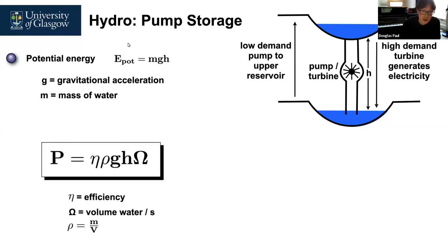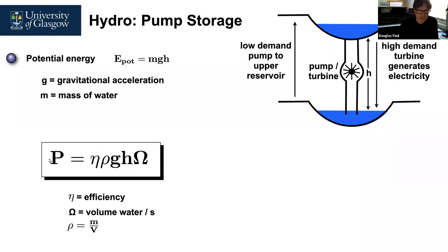The power from this comes from dividing energy by time. We convert mass to density — density being mass over volume — and omega is the volume of water per second, so these cancel out to give us back mgh. We also include efficiency. The power for a pump-storage hydro scheme is: efficiency times density of water times gravitational acceleration times height of the upper reservoir times the volume flow rate through the turbines.